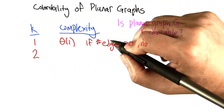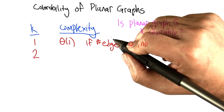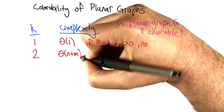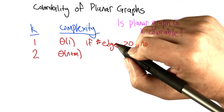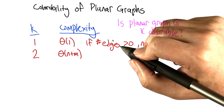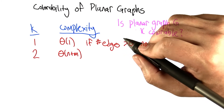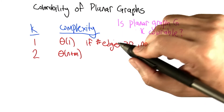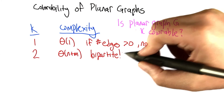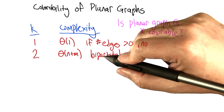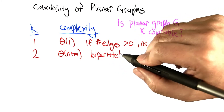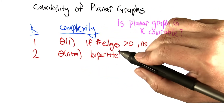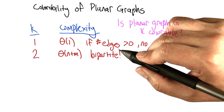What if K is 2? We want to know, is this graph 2-colorable? You know this one already, because 2-colorability is exactly the same as testing whether the graph is bipartite. In a previous unit, you showed that that could be solved with depth-first search and therefore runs in big theta of n plus m.